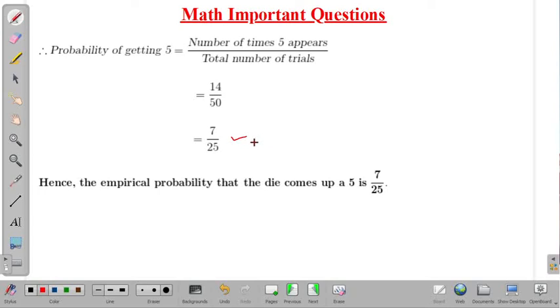Hence, the empirical probability that the die comes up a 5 is 7 by 25.